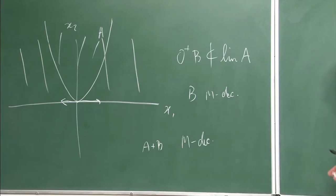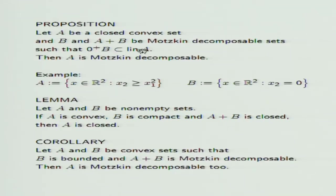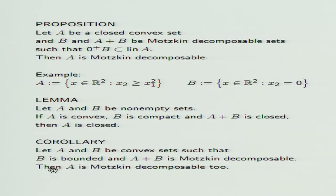In particular, if the set B is bounded (compact), then the recession cone reduces to zero and will be contained in the linearity space of A, so the property holds. This is stated in the corollary, where we additionally do not require A and B to be closed — A and B are just convex and B is bounded — yet we still get the same conclusion: if A plus B is Motzkin decomposable, then A must be Motzkin decomposable.